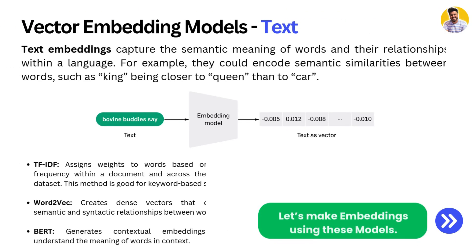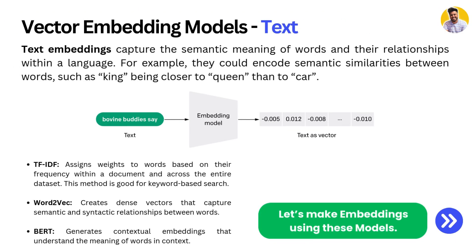Then we have text embeddings. In text embeddings, we capture the semantic meaning of words — the actual meaning behind the words — along with their relationships to other words. For example, they could encode semantic similarities between words such as king being closer to queen than to a car, because we say king and queen, not king and car. That is how their semantic meanings are captured.